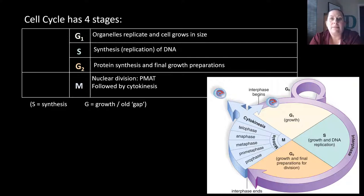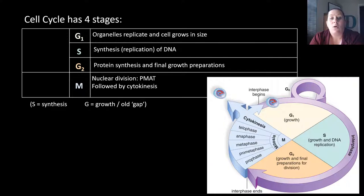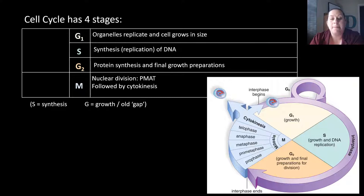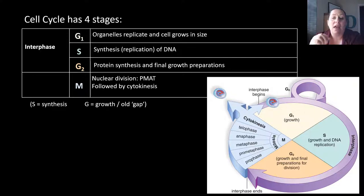The next stage is the M phase, which stands for mitosis. This is where the nucleus divides, followed by the division of the cytoplasm — cytokinesis. Nuclear division happens in sub-phases represented by PMAT: P is prophase, M is metaphase, A is anaphase, and T is telophase. The whole process of G1, S, and G2 collectively is known as interphase, and this is where the majority of the cell's time is spent.